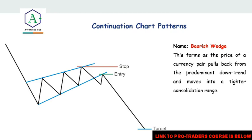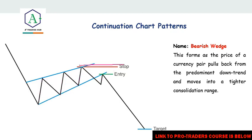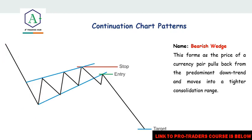You look out for the bearish wedge when price is in a downtrend. When you see a downtrend and price pulling back, you wait for it to break out of these highs and retest. Once price breaks out and retests and you see some bearish price action — bearish impulse or bearish candlestick formations — you take a sell. Place your stop loss below the previous swing high. Your target will also be the same number of pips as the first impulse.